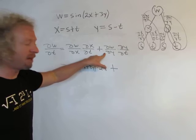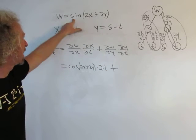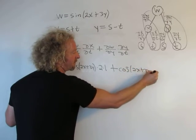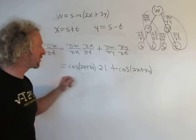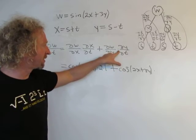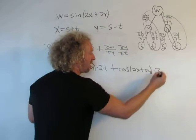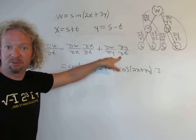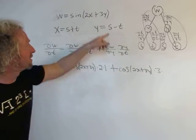Here, del w, del y. Again, the derivative of sine is cosine. So cosine 2x plus 3y. And then we take the partial, the derivative of the inside. Right. So it's going to be 3. And the derivative of y is 1. And then you're supposed to multiply by del y, del t. So that would be, in this case, negative 1.